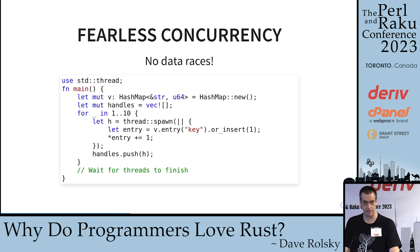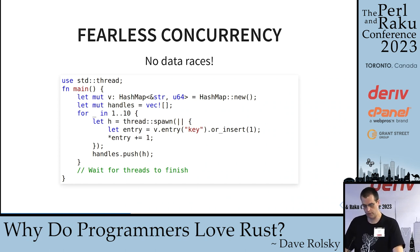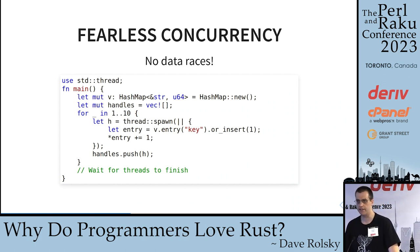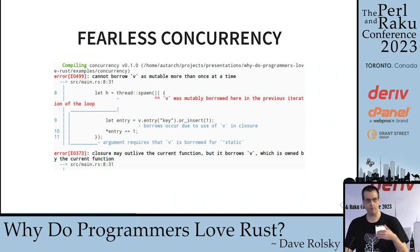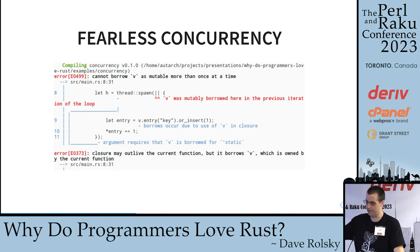Another thing Rust provides for concurrency is that it does not allow data races. In this example, I have a mutable hash map, and I'm going to spawn a bunch of threads and inside each thread try to mutate the hash map. The compiler really doesn't like this — it says 'V was mutably borrowed here in the previous iteration of the loop.' You can't mutably borrow something more than once. The compiler doesn't let you do this thing that is very dangerous.